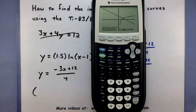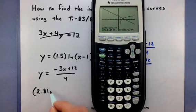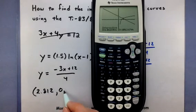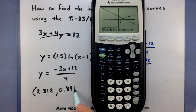Now most of the time we probably want to round these. So I'm going to round this to like 2.812 and 0.891. There we go. So this gives me the x and the y coordinates of where the two equations cross.